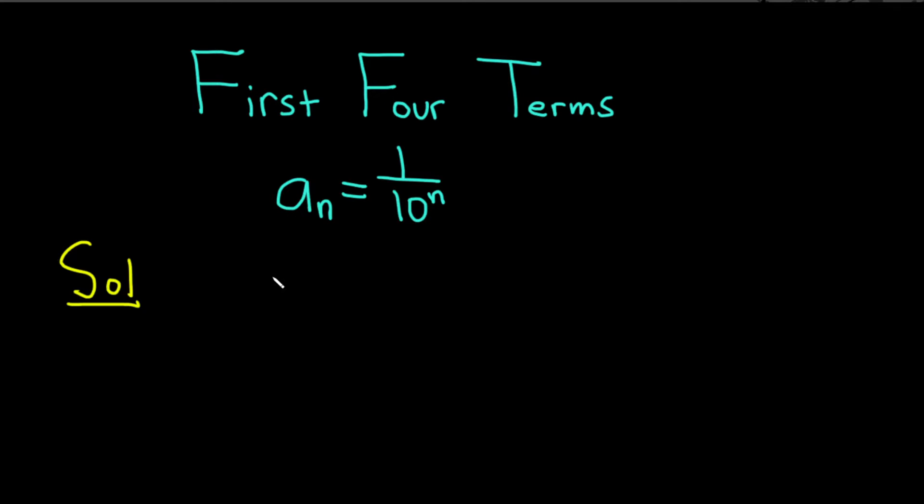So to find the first term of the sequence, which is called a sub one, we just replace all of the n's with the number one. So we have a sub one and that's equal to one over ten. And instead of an n now, we're going to put the number one there. So that's equal to one over ten. So the first term of the sequence, I'll write it again, is a sub one equals one over ten. This would be the very first term.